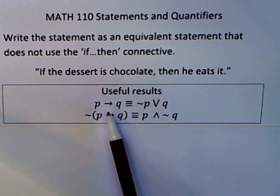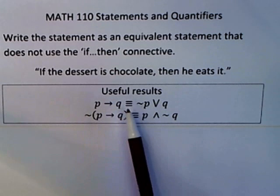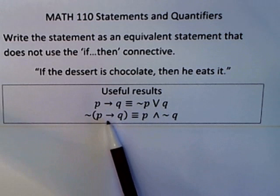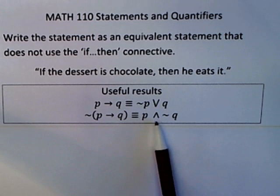In particular, an if-then statement, an implication, can be written as an or, and the negation of an implication can be written as an and.